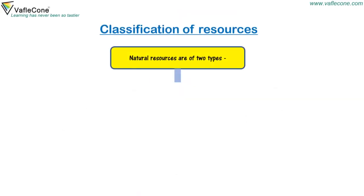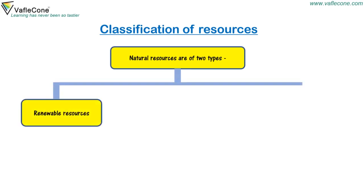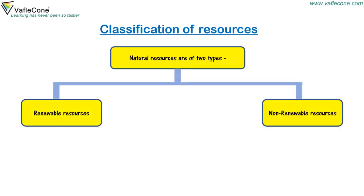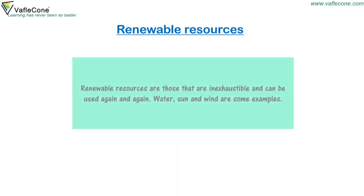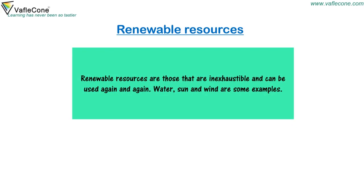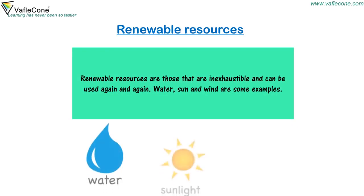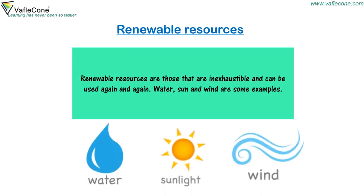Natural resources are of two types: Renewable Resources and Non-Renewable Resources. Renewable resources are those that are inexhaustible and can be used again and again. Water, sun and wind are some examples.